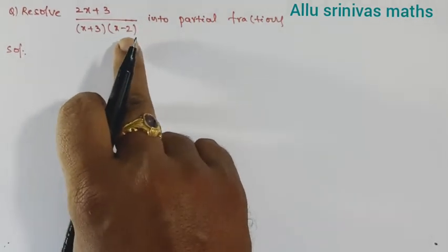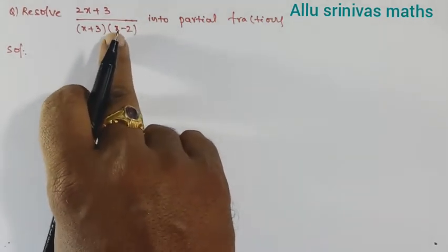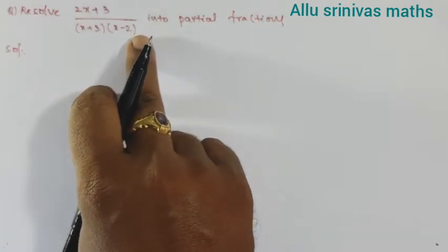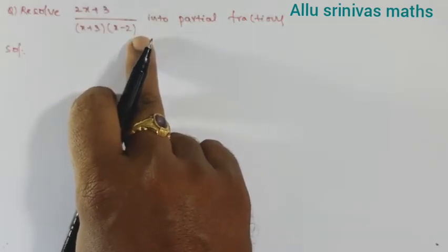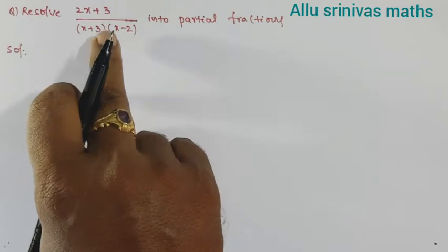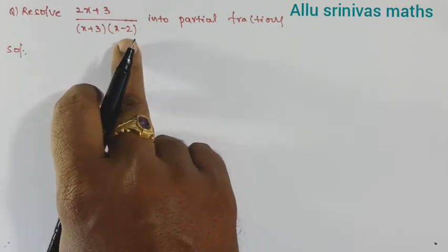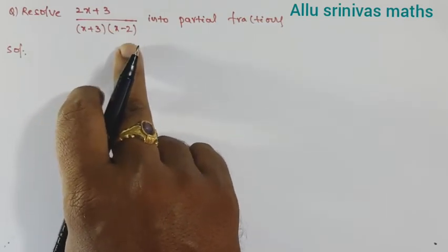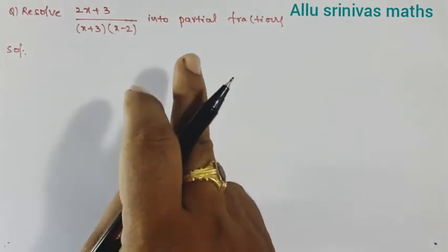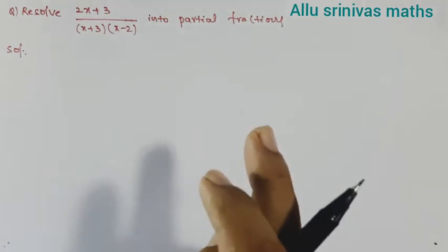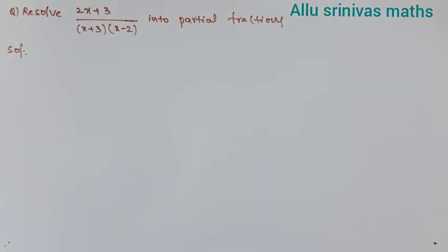As per the rule, there exist two partial fractions. So if we can determine these two values, that will be the solution — we can find out the partial fraction of the given proper fraction. Let us do it.